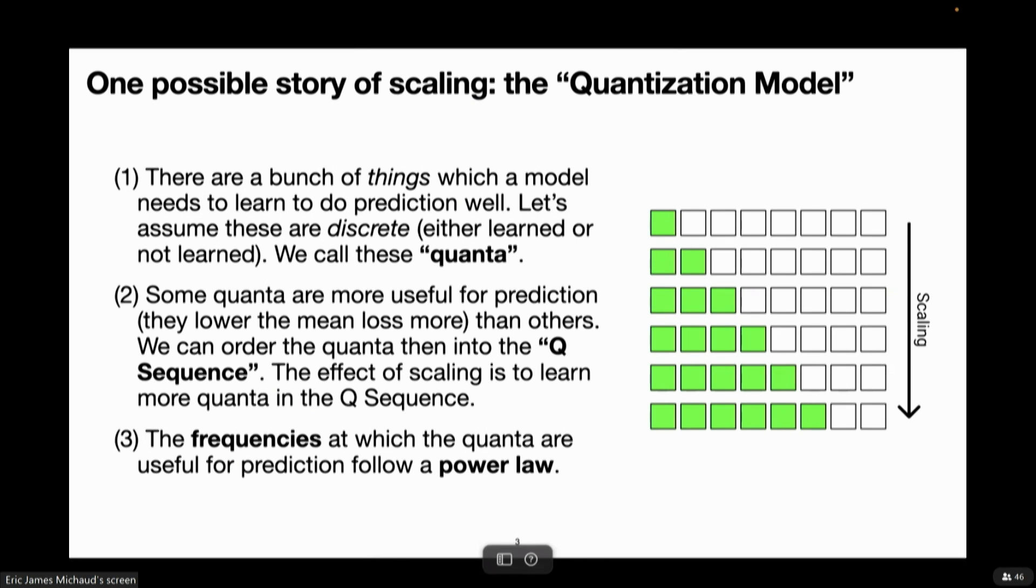And so the basic assumptions that we make in the model are that maybe to do prediction well on something like natural language, there are just a bunch of discrete things you need to learn, like pieces of knowledge about language or about the world, or computations that you need to learn how to implement internally if you're in a neural network and you're going to do prediction well. And we're going to assume that these are discrete in the sense that each one of these pieces of knowledge or pieces of computation can be thought of as either having been learned or not having been learned by a neural network.